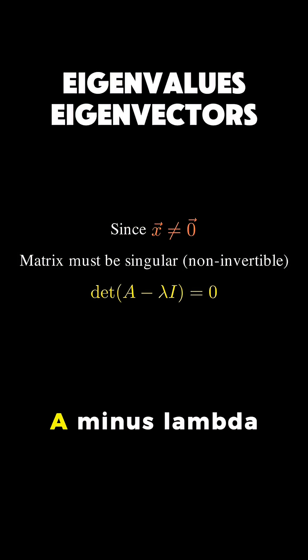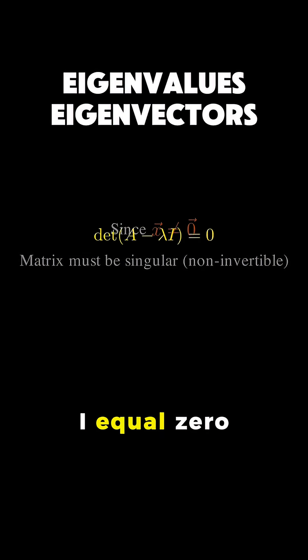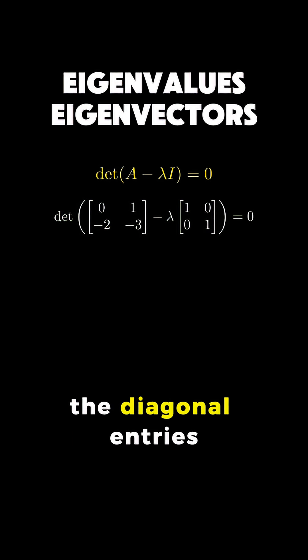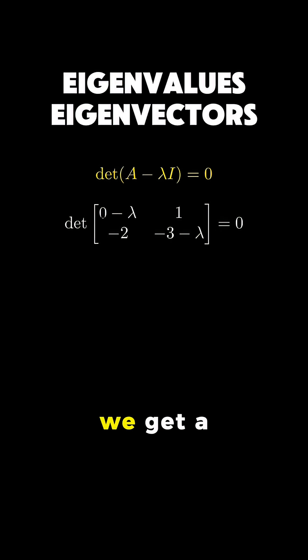The determinant of A minus lambda i equals zero. Let's compute this for our example. Subtracting lambda from the diagonal entries of A, we get a new matrix.